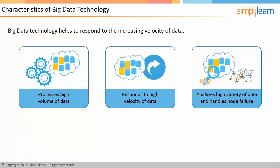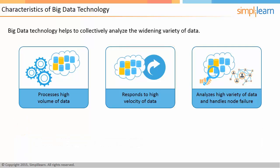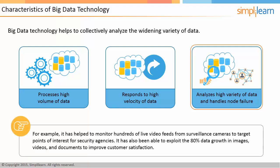The second characteristic of big data technology is that it helps respond to the increasing velocity of data. For example, it has scrutinized 5 million trade events created daily to identify potential fraud, and analyzed 500 million daily call detail records in real time to predict customer churn faster. The third characteristic is that it helps collectively analyze a widening variety of data, handles failure of isolated nodes, and turns data into actionable insights — for example, monitoring hundreds of live video feeds from surveillance cameras, and exploiting the 80% data growth in images, videos, and documents to improve customer satisfaction.